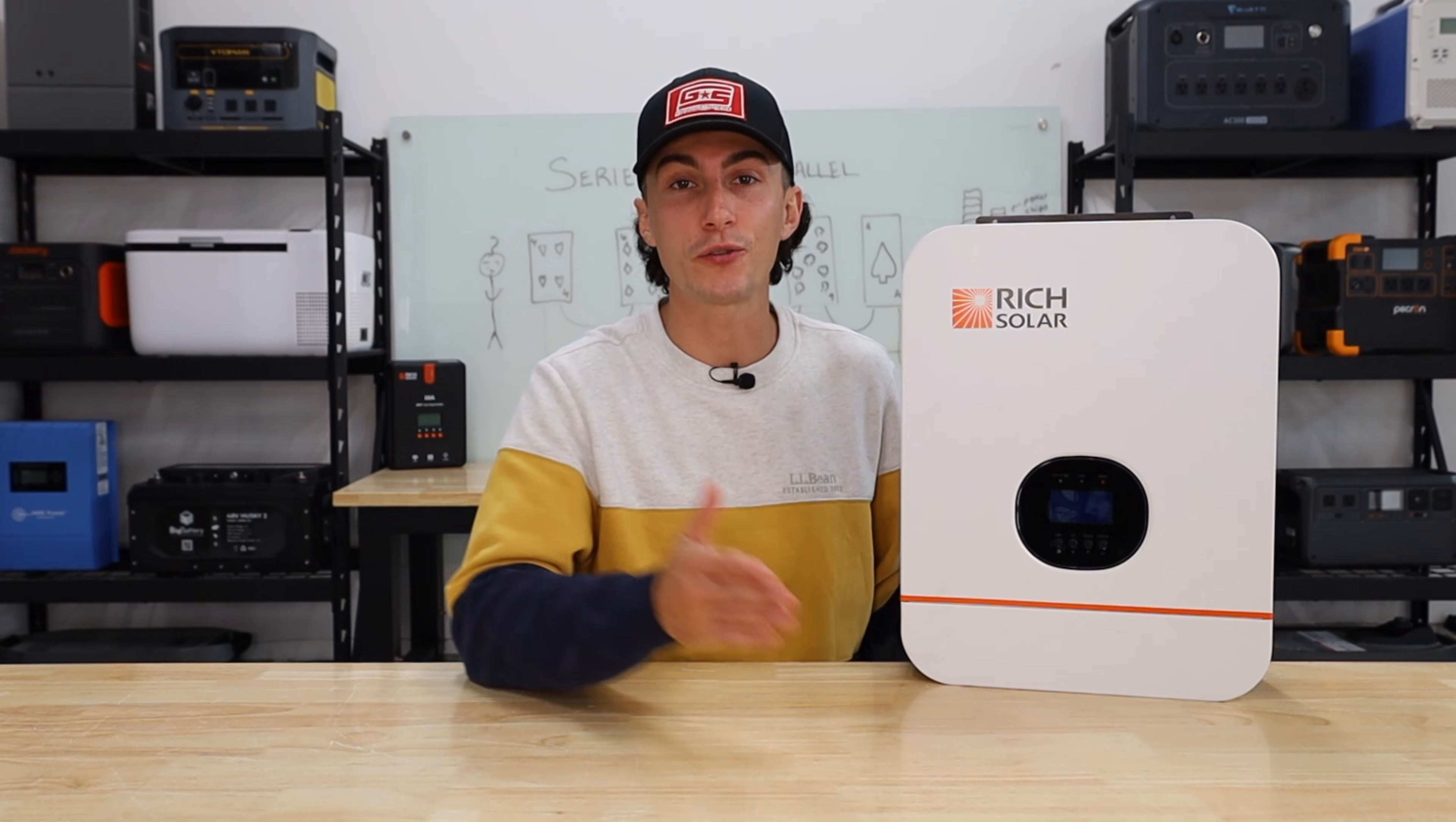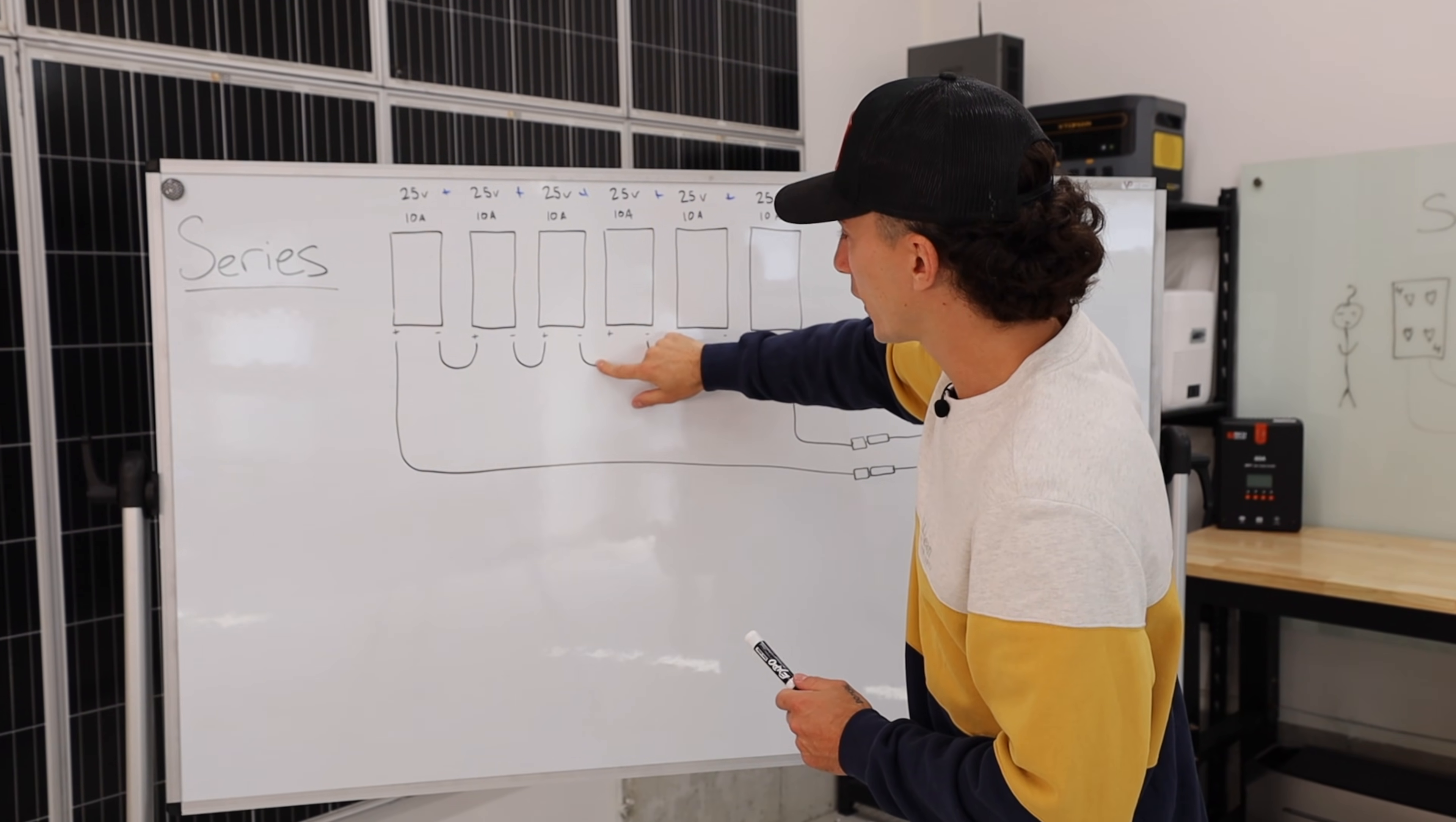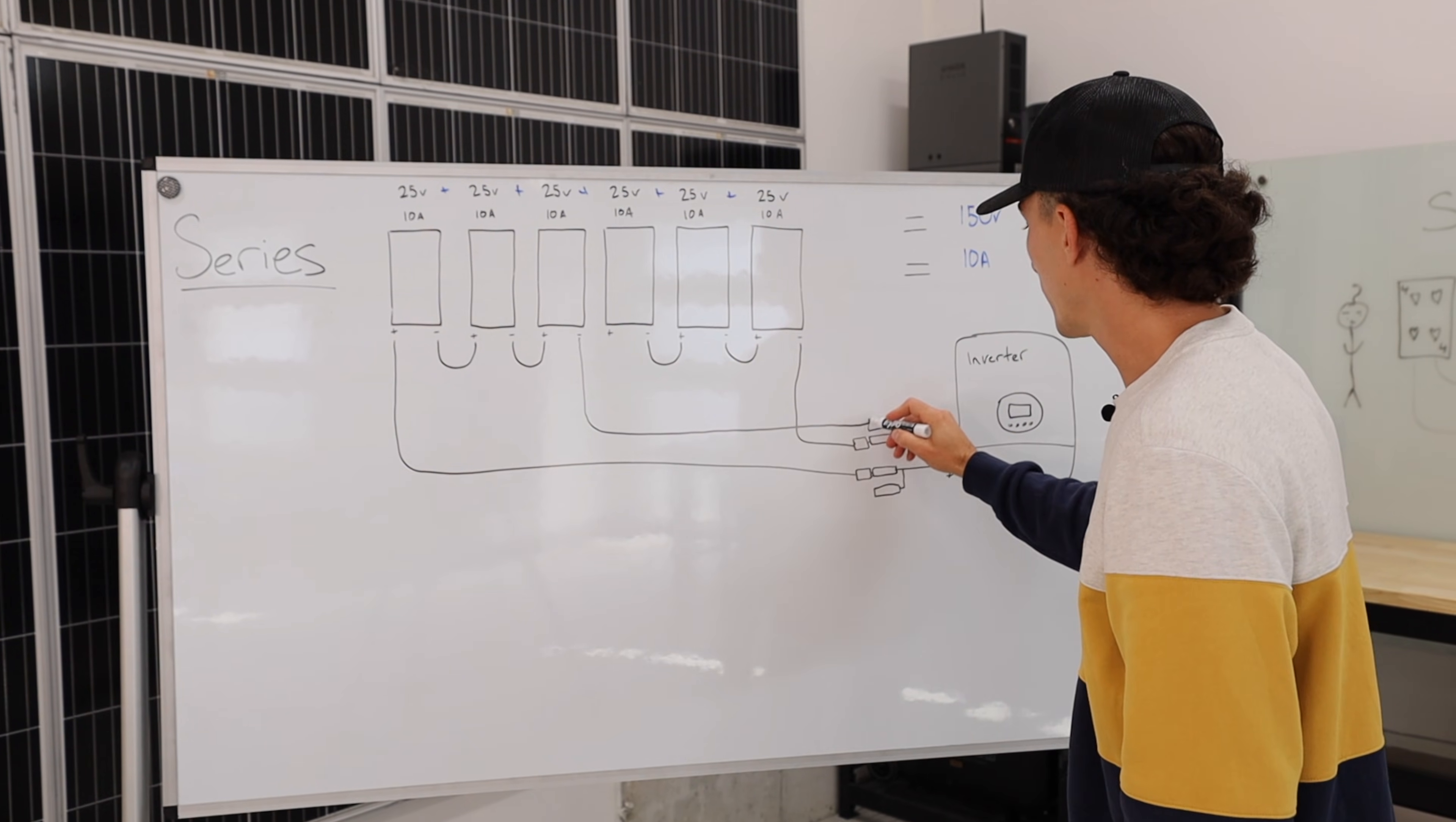When it comes to actually trying to wire this into that Rich Solar inverter, there's actually only one way that we can get this array to work with that inverter. The only way this is possible is if you break the connection right here in the middle, turn this into a little branch connector, same with this guy, and then you basically turn this into its own individual string and you turn this into its own individual string.